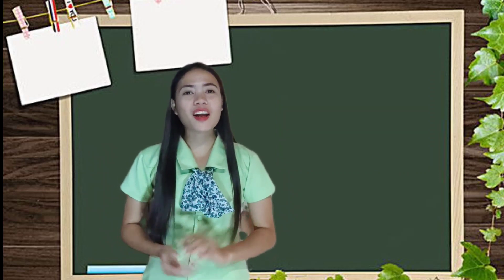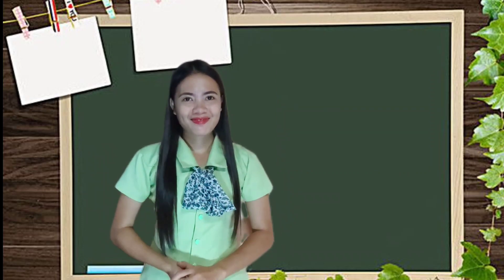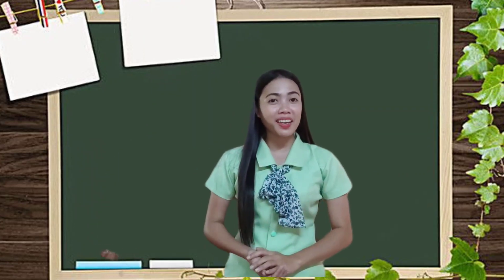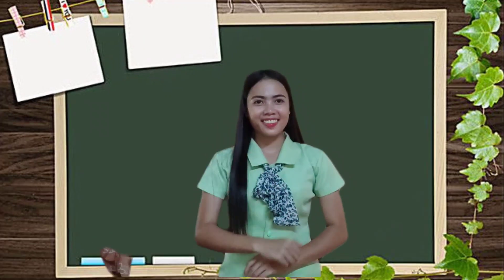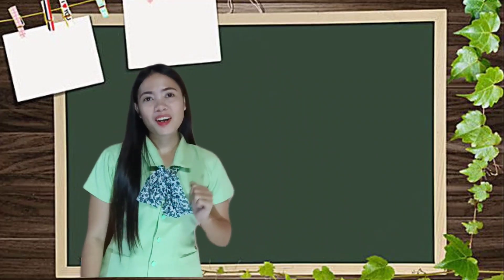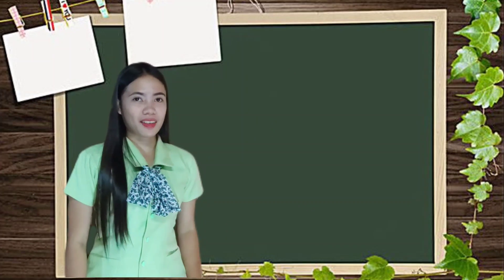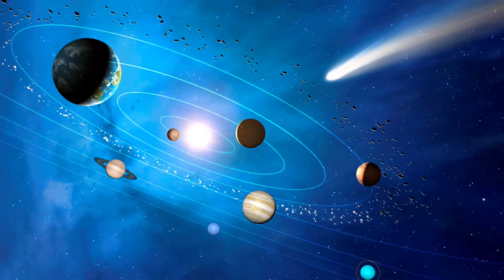Now class, make sure to have your pen and paper ready, for we are about to begin our lesson. Are you ready to learn with me? All right, let's start our lesson with this activity. What do you call this picture, class? Yes, you're right — this is our solar system. Are there other objects found in the solar system that look different, aside from our Sun and our planets?